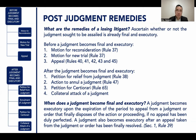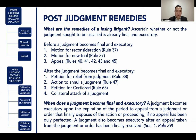Before a judgment becomes final and executory, the remedies of a litigant are the following: motion for reconsideration under Rule 37, motion for new trial under Rule 37, and appeal under Rules 40, 41, 42, 43, and 45.